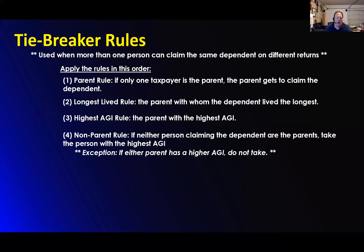Then the highest AGI rule. I don't actually see this one as fair, but it is the rule. If they have lived with both parents for literally the exact same amount of time — both had six months out of the year — then it falls under income level. Whichever one has the highest adjusted gross income gets to claim them, because that means they will get the highest benefit from that dependent. That's the one who gets to claim them.